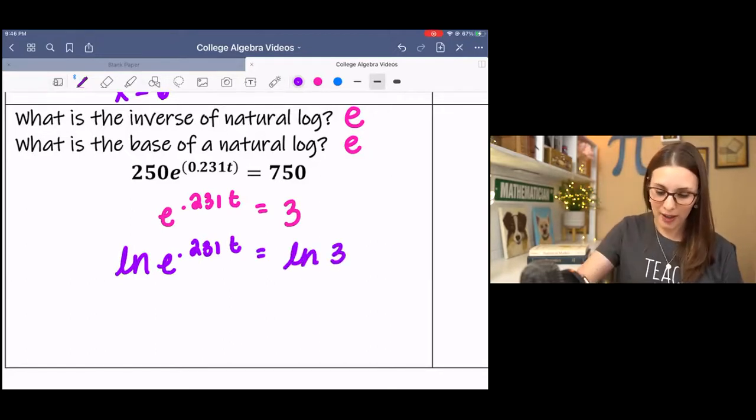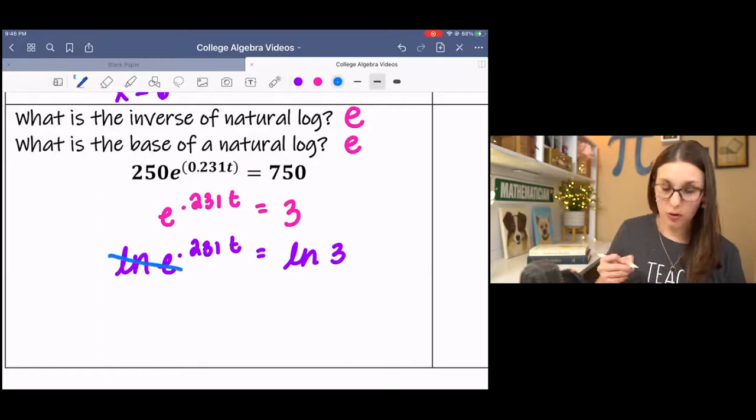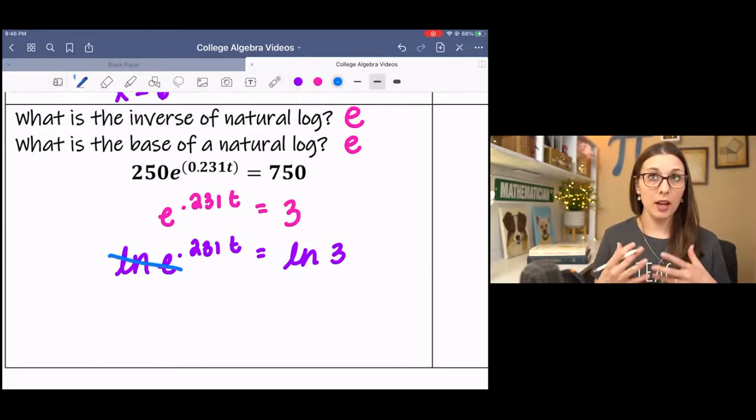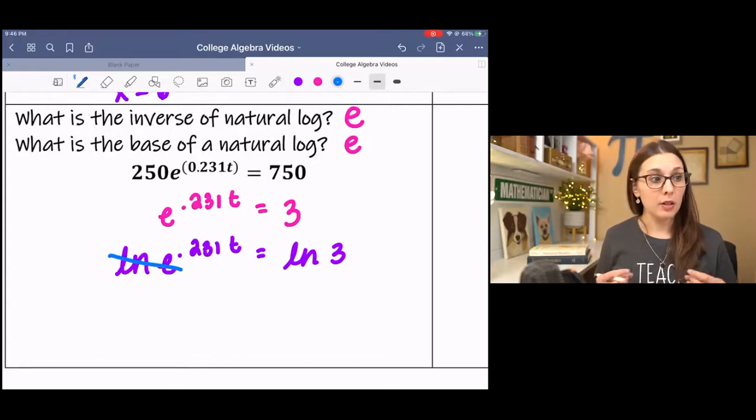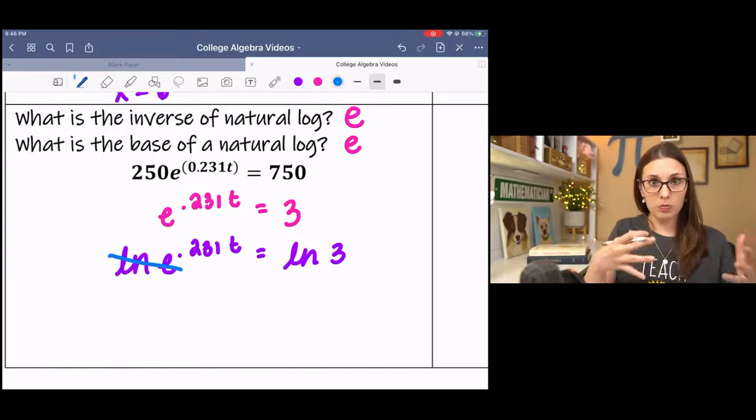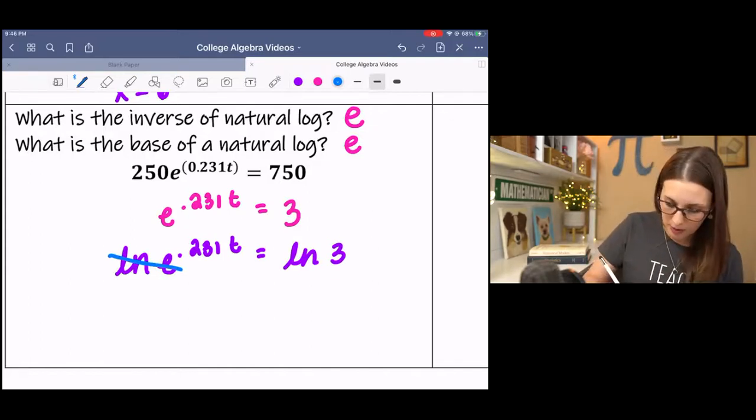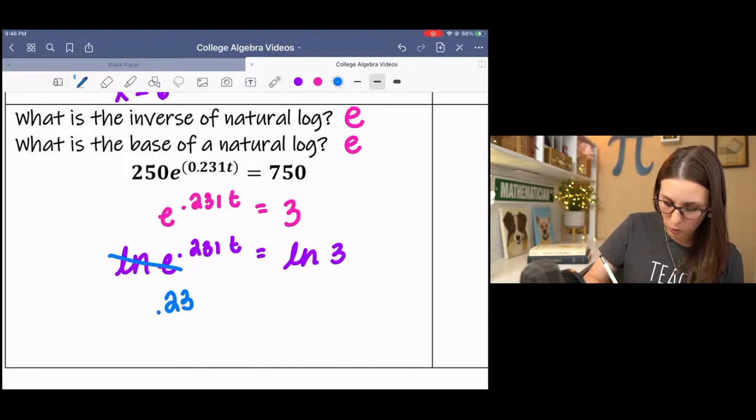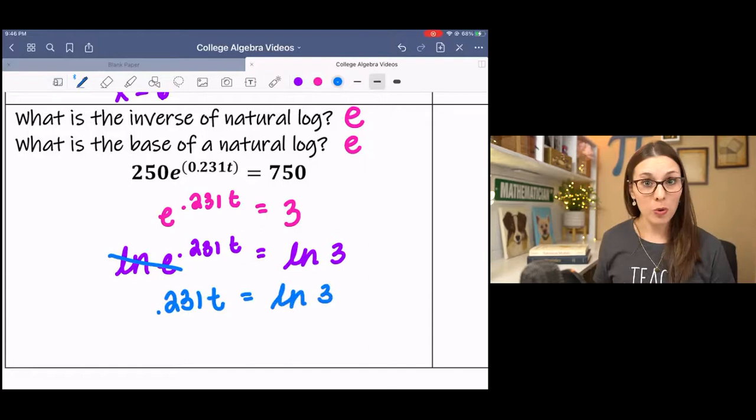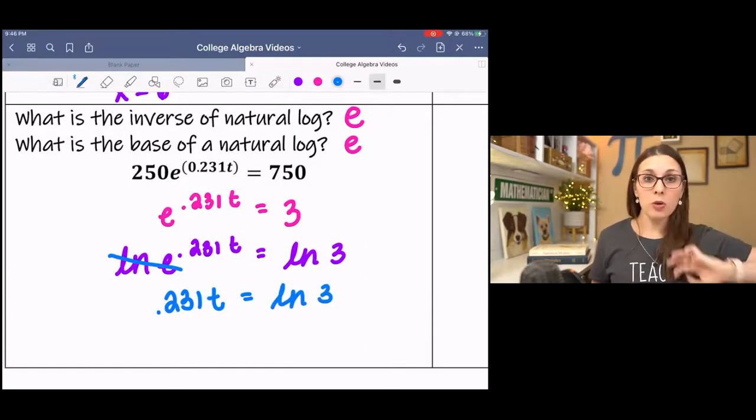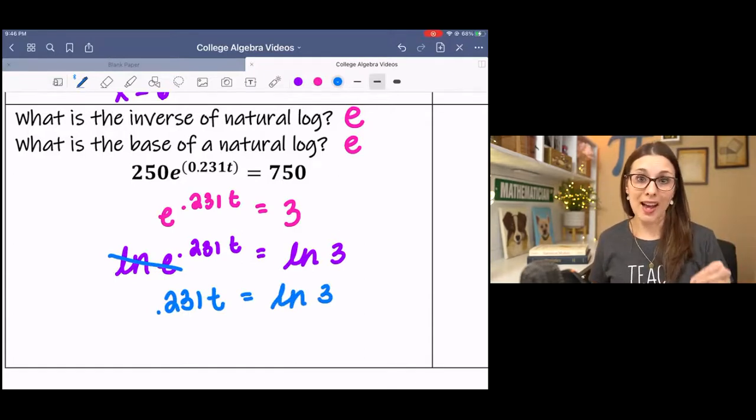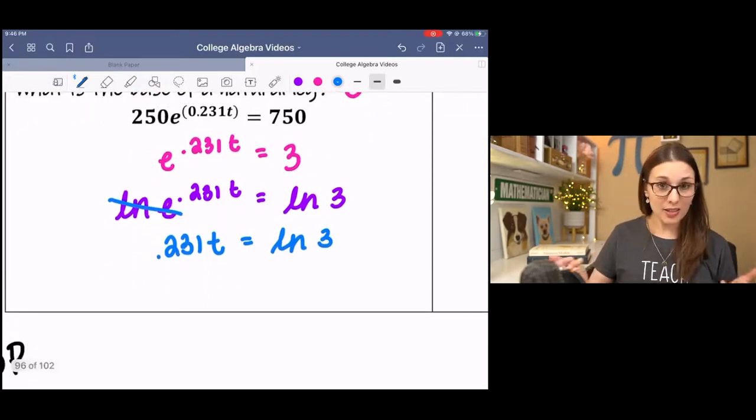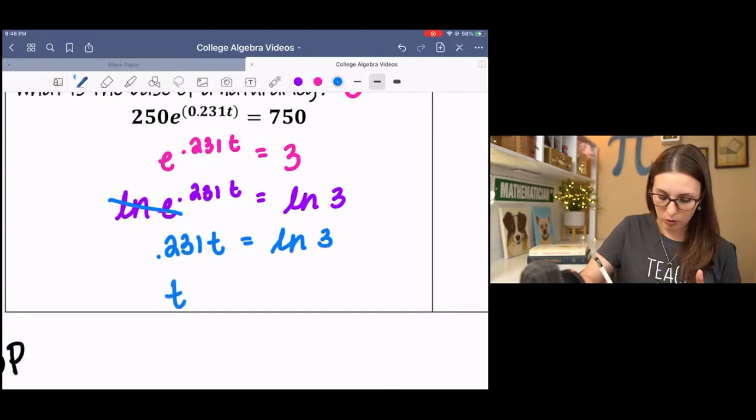Natural log 3. Then right here, natural log e, those are inverses, so they equal 1. Natural log is base e, so e to the 1 is e, which it's a 1. And what happens is this 0.231t drops down. And then we have an equation that we can solve. I am going to leave natural log 3 as natural log 3 because I don't want to have rounding error. Last step is to divide by 0.231. So natural log 3 over 0.231, that's an exact solution.